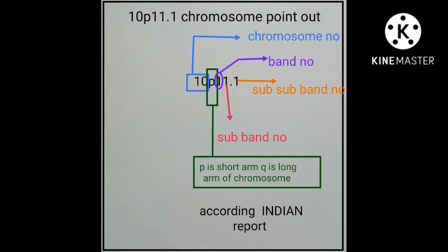For example, 10p11.1 means chromosome number 10, the gene is present on the p arm, the band is one, the sub-band is one, and the sub-sub-band is one. Thank you.